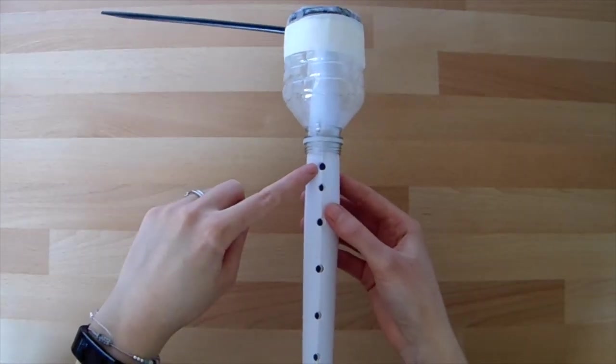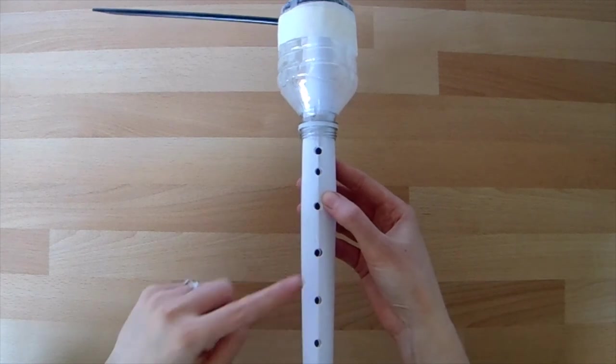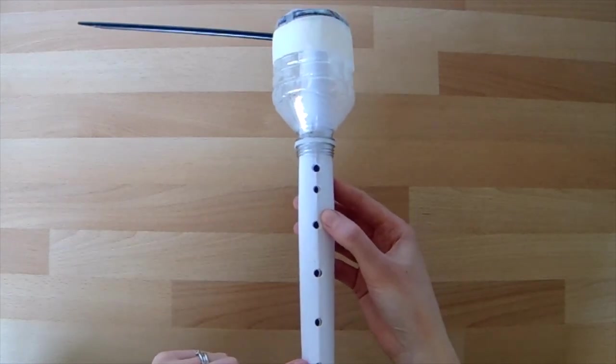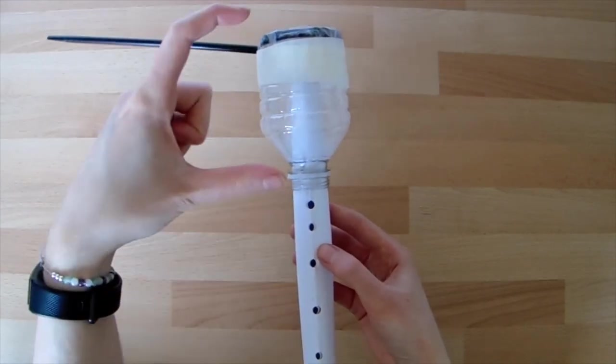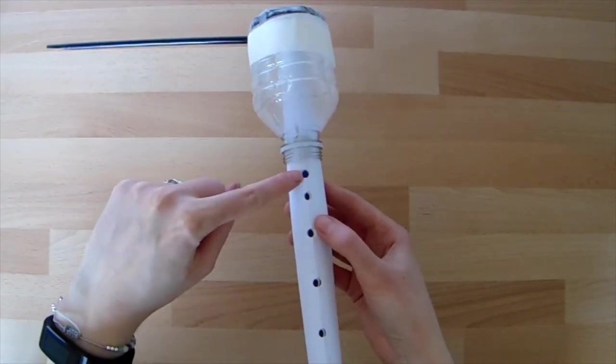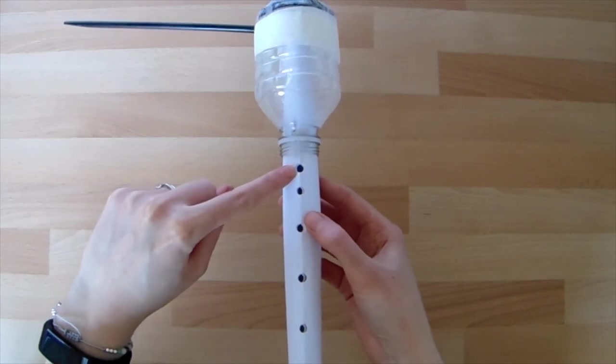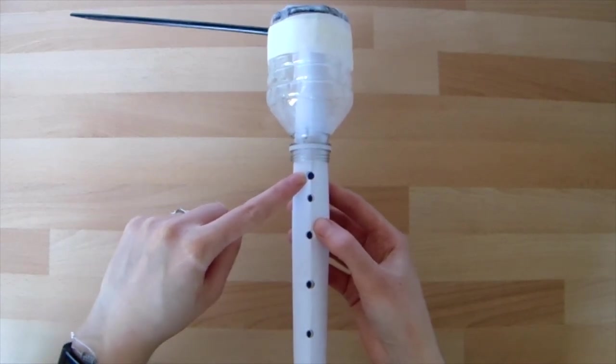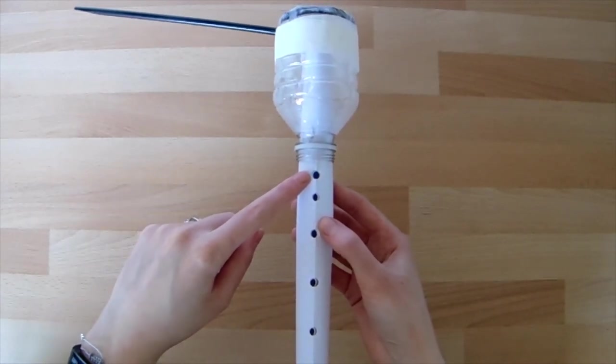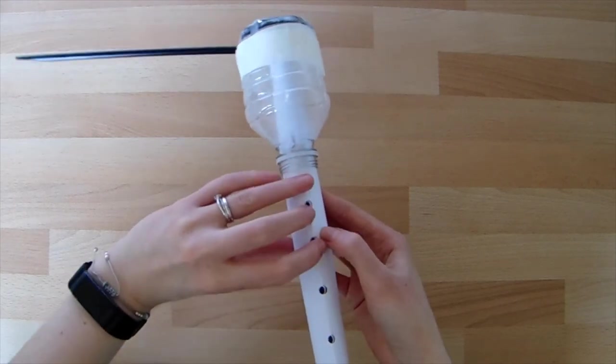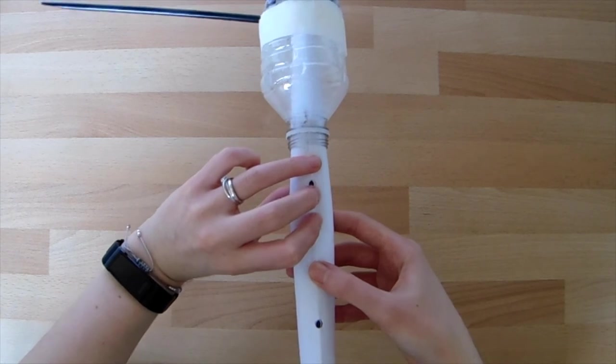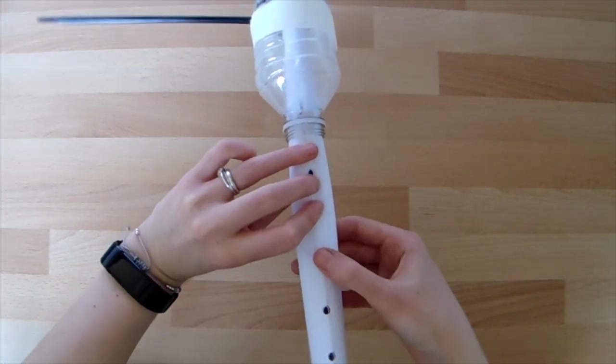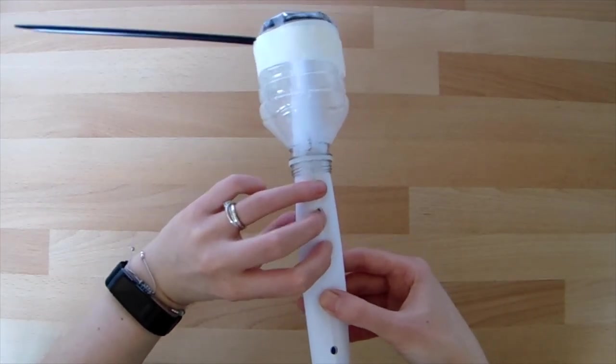We can change the pitch of our sound by opening and closing the holes on our tube. This changes the volume of air trapped inside our tube. If there is a small volume of air, the air vibrates quicker at a higher frequency and we get a higher pitch. But if we close the holes, we get a larger volume of air and the air vibrates slower at a lower frequency, meaning we get a lower pitch.